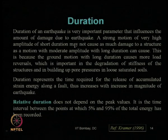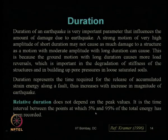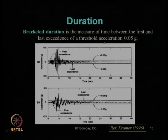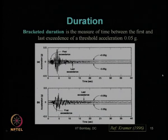We also discussed duration parameters. Duration is the time required to release the entire strain energy during an earthquake. The relative duration is the time between 5% and 95% energy release. For engineering design, the bracketed duration is the time during which earthquake acceleration exceeds the threshold of 0.05g — the minimum acceleration that causes structural damage. With this, we completed our previous lecture.